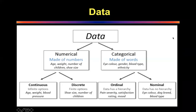Data that you record into an Excel sheet is of two types. One is called numerical data, made up of numbers — age, weight, number of children, shoe size, etc. The other is categorical data, made up of words — eye color, gender, blood type, ethnicity, etc. Numerical data can further be two types: continuous or discrete. Continuous means there are infinite options — it can go from zero to infinity — so age, weight, and blood pressure are all continuous data.